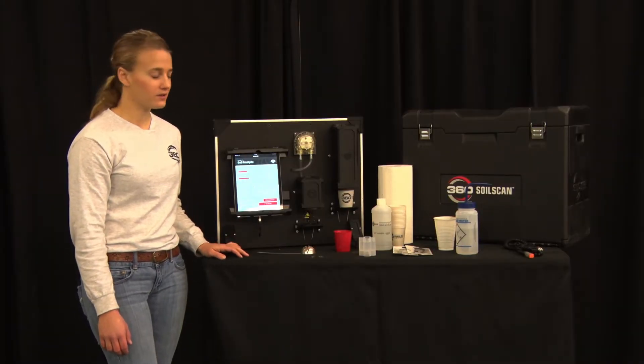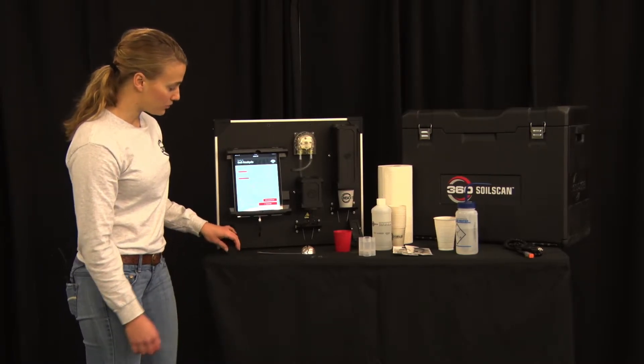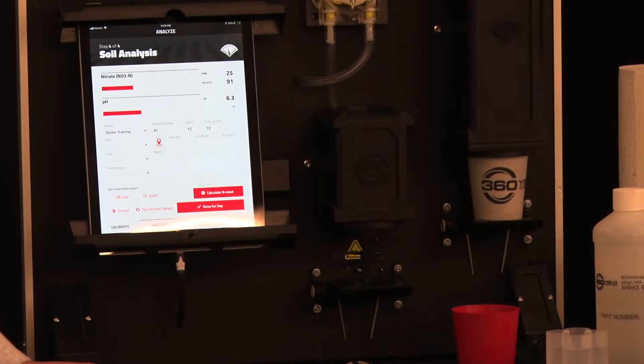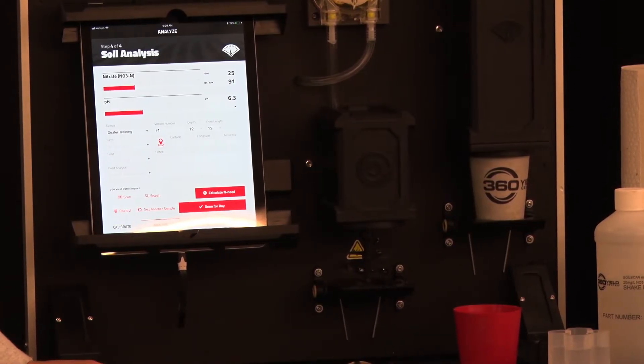When the soil scan has completed its analysis you'll see parts per million and your pH levels. So for this soil that I was testing it's 25 parts per million and 6.3 pH.